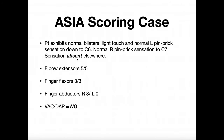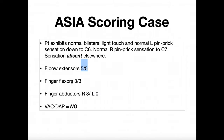Looking at the information we have: elbow extension is 5 and 5 — meaning a 5 on the right side and a 5 on the left side. If they're both the same score, we don't have to indicate right and left. Finger flexion on both sides is a 3 — that's 3 out of 5 on both sides. Then for finger abduction, on the right we have 3 out of 5, and on the left, 0 out of 5.